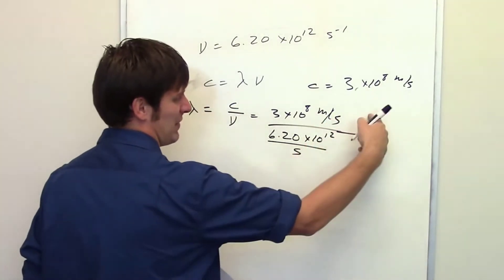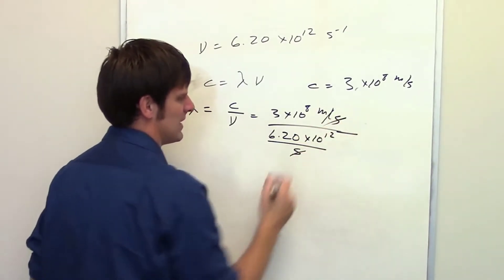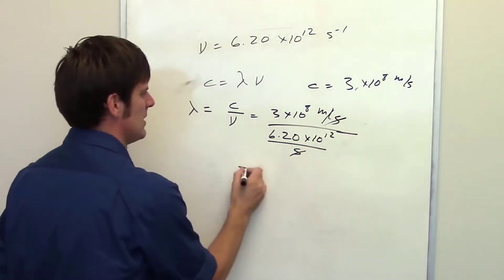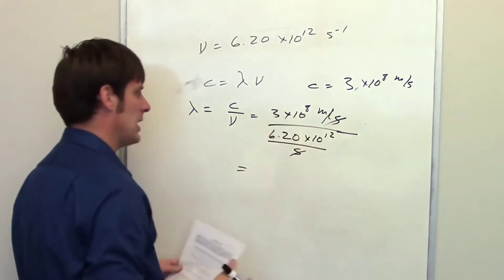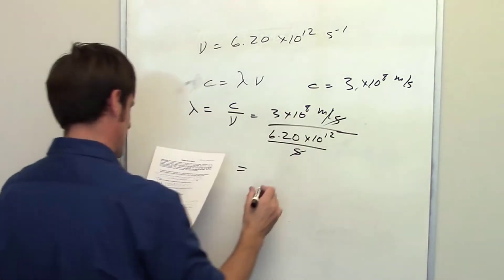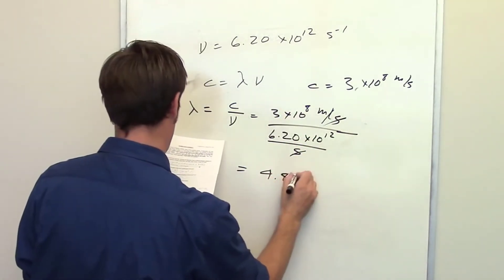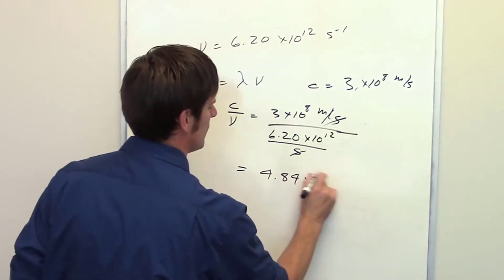So if I've got seconds over here and this guy's already in a denominator, these two seconds cancel each other out. Hopefully that makes sense. Plug and chug using my calculator, and the answer that I came up with is 4.84 times 10 to the negative fifth meters.